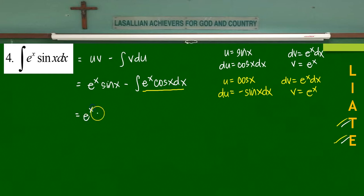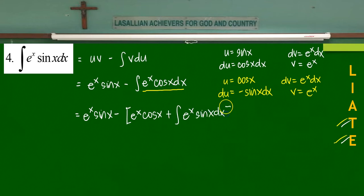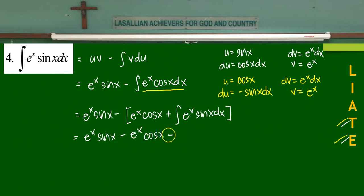Copying the first part, eˣ·sin(x), and replacing the integral with the new uv minus integral of v du gives eˣ·cos(x) minus the integral of eˣ·(negative sin(x)) dx. Removing the grouping symbols, this expands to eˣ·sin(x) minus eˣ·cos(x) minus the integral of eˣ·sin(x) dx.